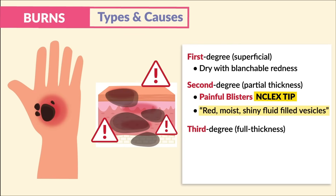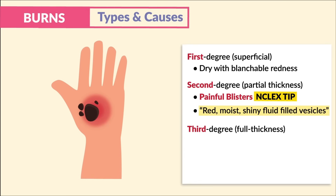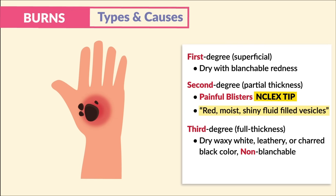Third degree burns are full thickness burns — three layers of skin destruction: the epidermis, the dermis, and possible subcutaneous tissue. Key terms: dry, waxy white, leathery, or even charred black color. That is non-blanchable skin — big key terms for exams.